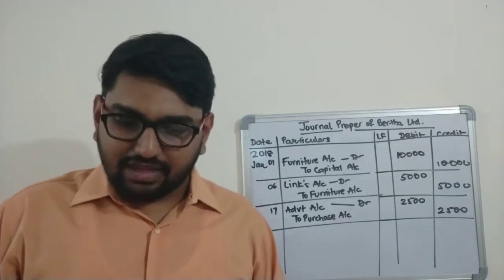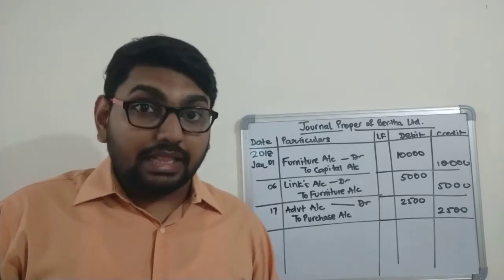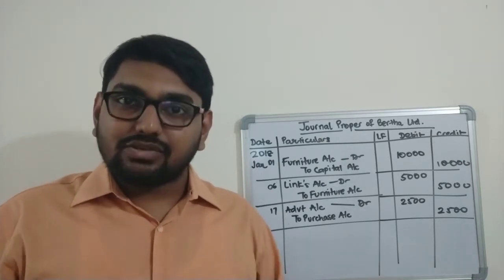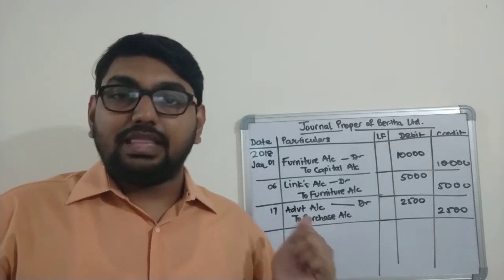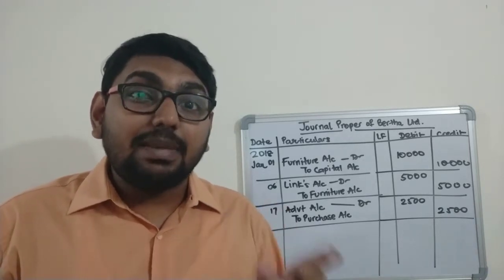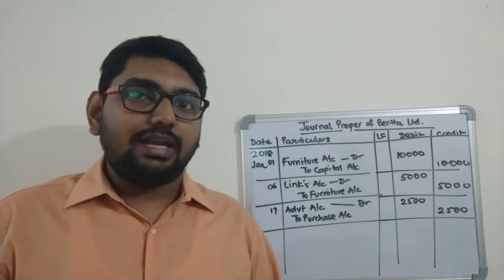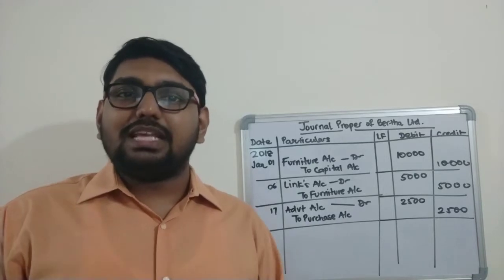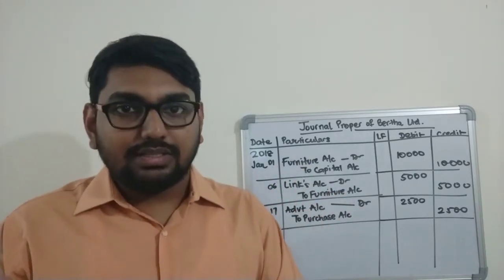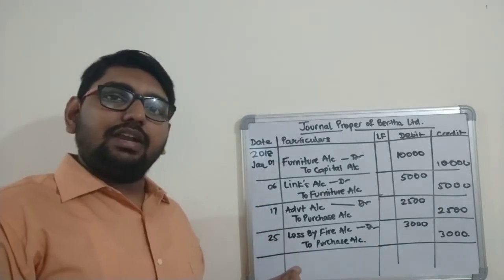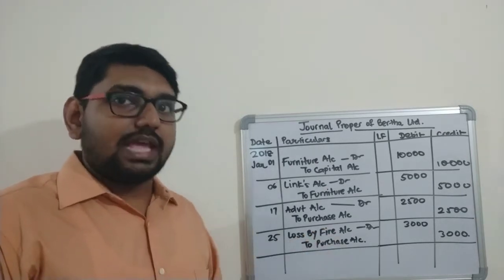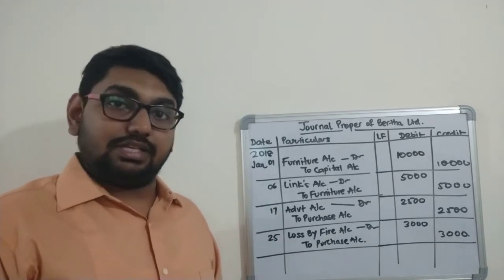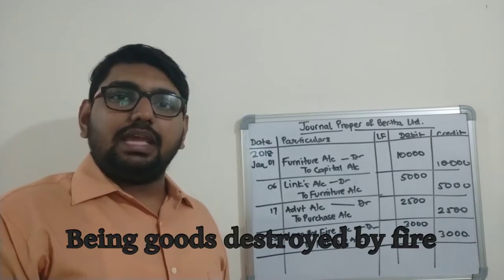January 25th: goods destroyed by fire, rupees 3,000. Again, no purchase, no sale, no returns, no cash involved — so this must be entered in the journal proper. The goods are getting destroyed, which is a loss, so debit loss by fire account. The goods are going out of the organization, so credit purchase account. Please do not confuse purchase account with the purchase book. Amount is 3,000. Narration: 'goods destroyed by fire.'